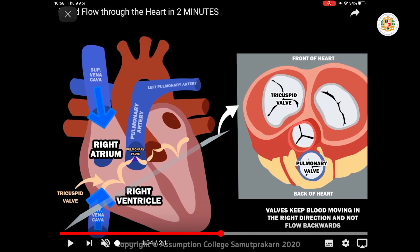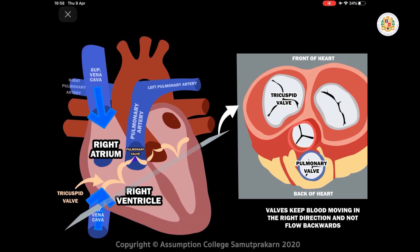The blood passes through the pulmonary valve to the pulmonary artery. Remember, arteries carry blood away from the heart. When you see the word 'pulmonary,' it represents the lungs. So the pulmonary artery carries blood from the heart to the lungs for gas exchange.